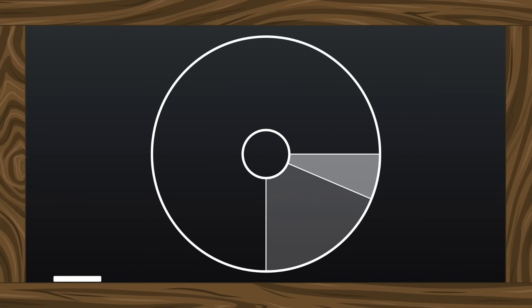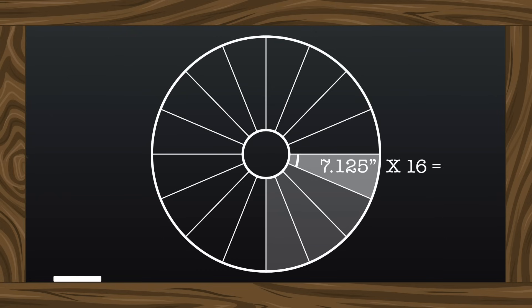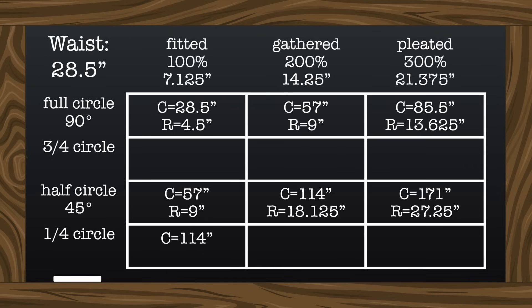So this time we'll only be patterning 1/16th of a full circle, and the curve of 1/16th must equal 7.125. So 7.125 multiplied by 16 gives us 114 inches for the fitted circumference, and 228 and 342 for the pleated and gathered circumferences.